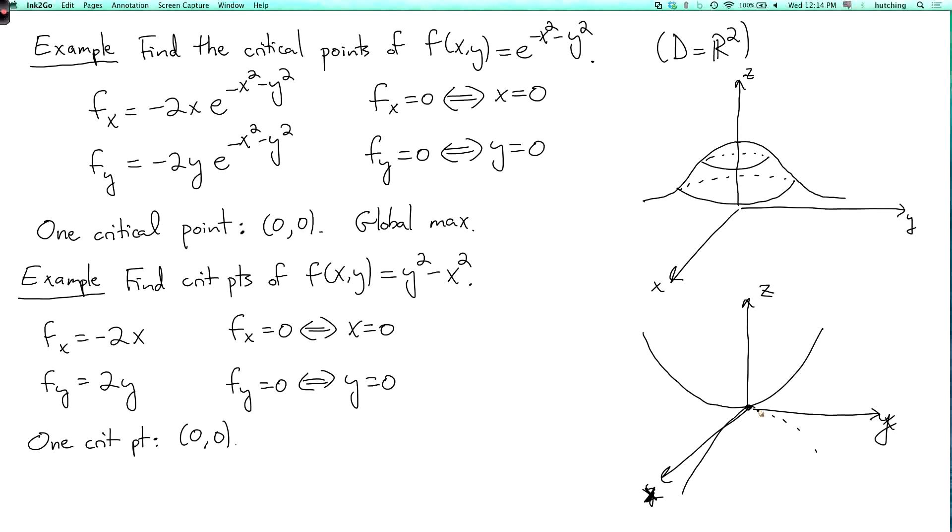Now the origin, if we start at the origin, if we move a little bit in the y direction then the function goes up. While if we move a little bit in the x direction, the function goes down. So this is neither a local minimum nor a local maximum. So this particular kind of critical point, it's what's called a saddle point. I'll define later what the definition of a saddle point is.